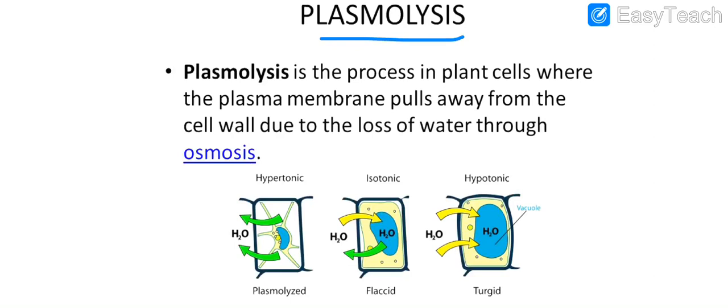Plasmolysis is the next important term. All three terms discussed in this video are important for this chapter and will also appear in higher grades. Plasmolysis is a process in plant cells where the plasma membrane pulls away from the cell wall.